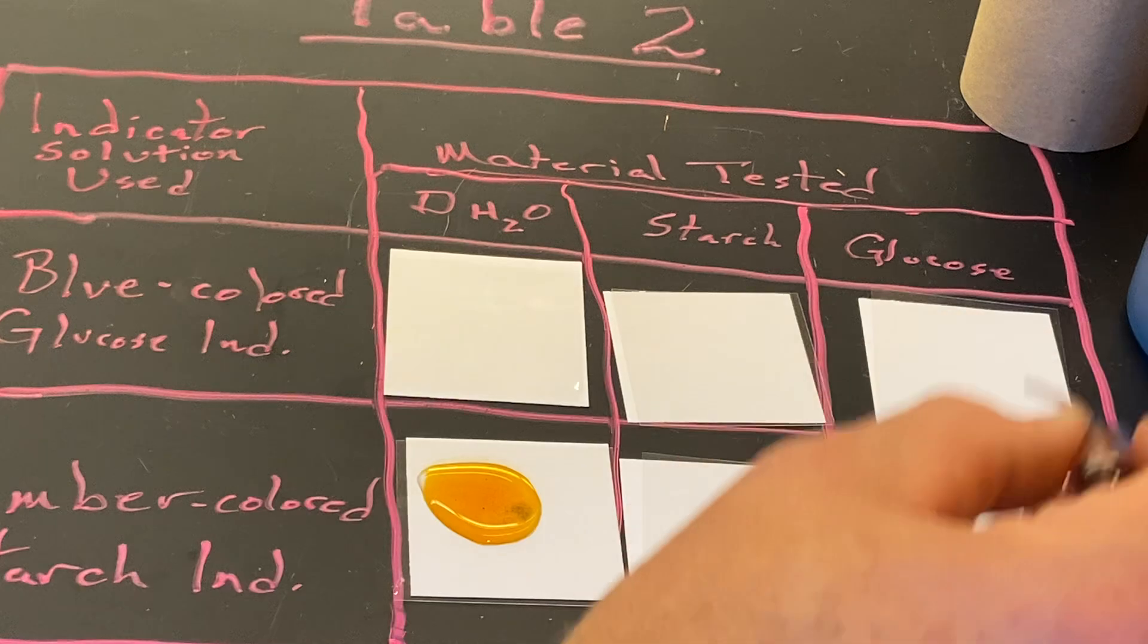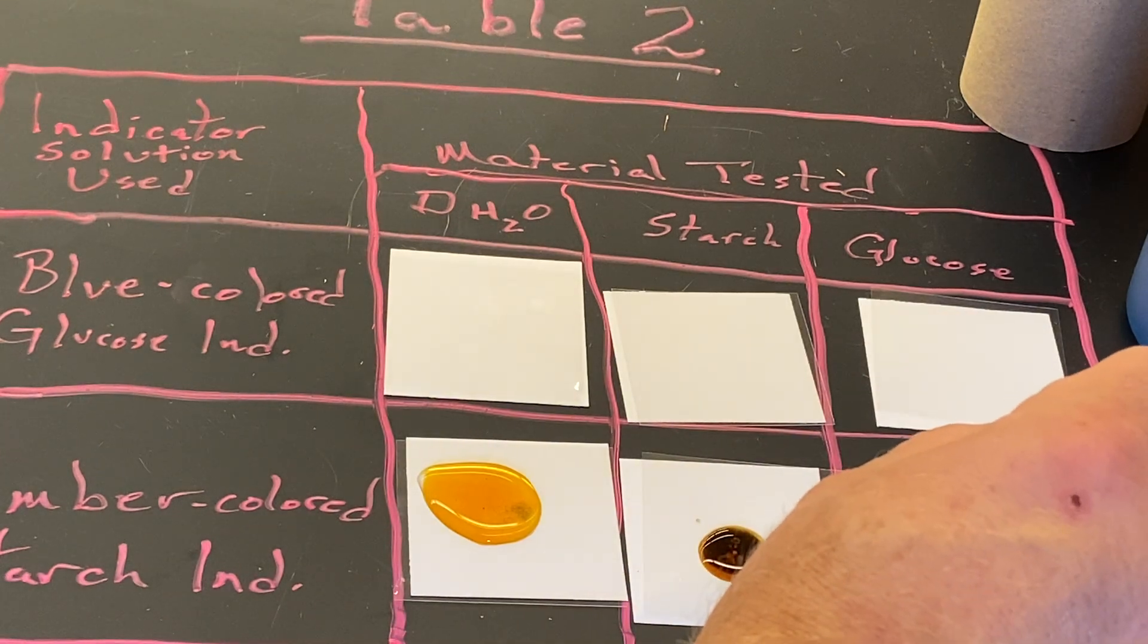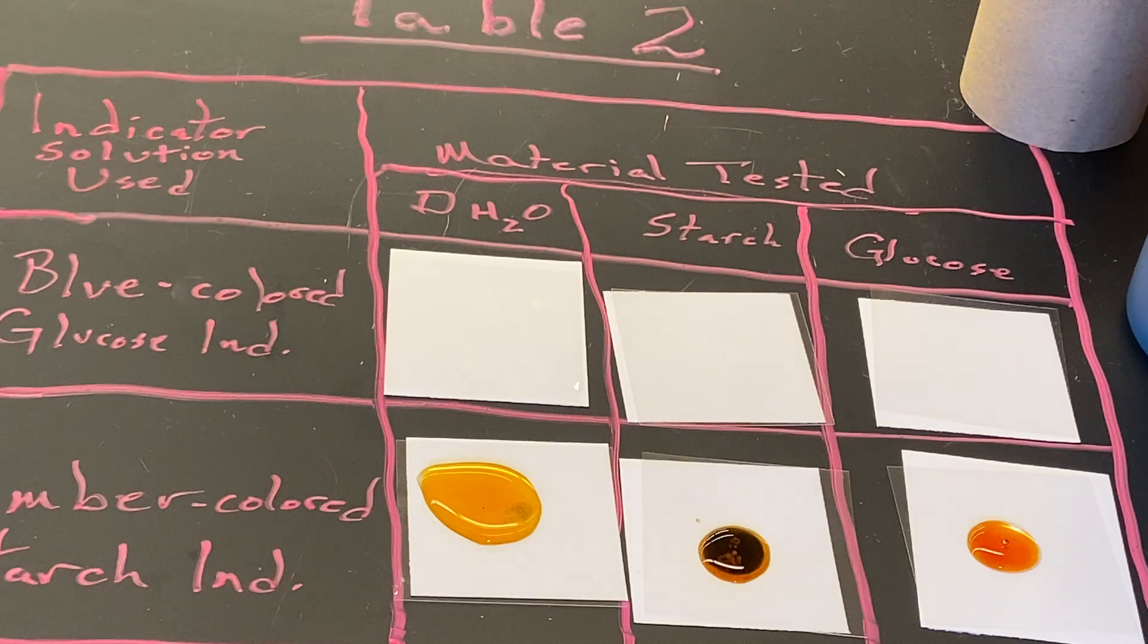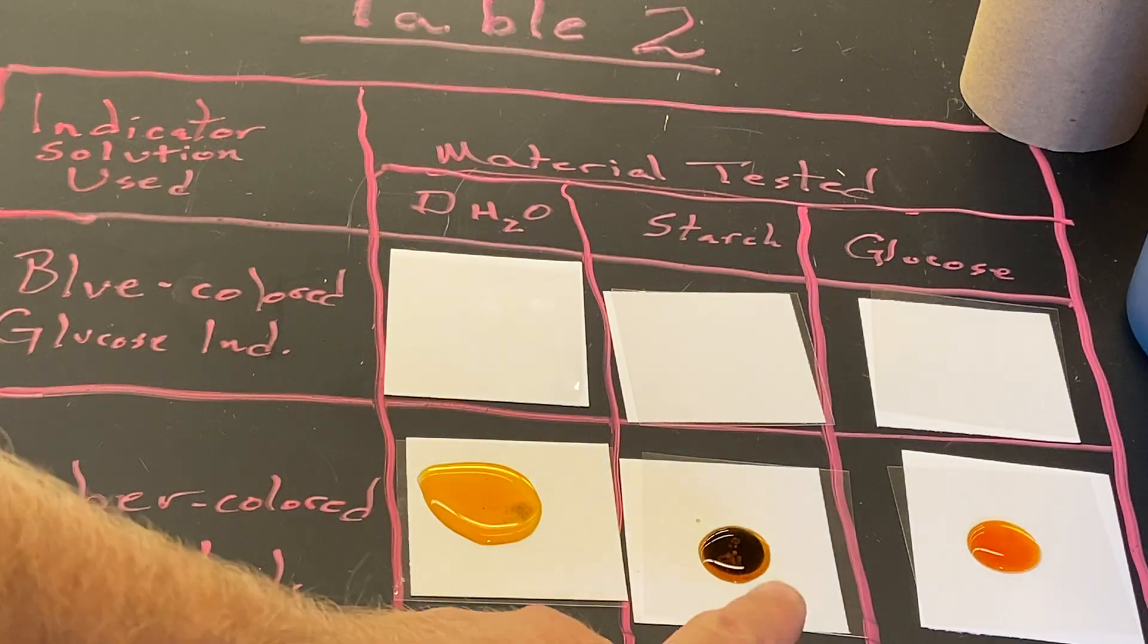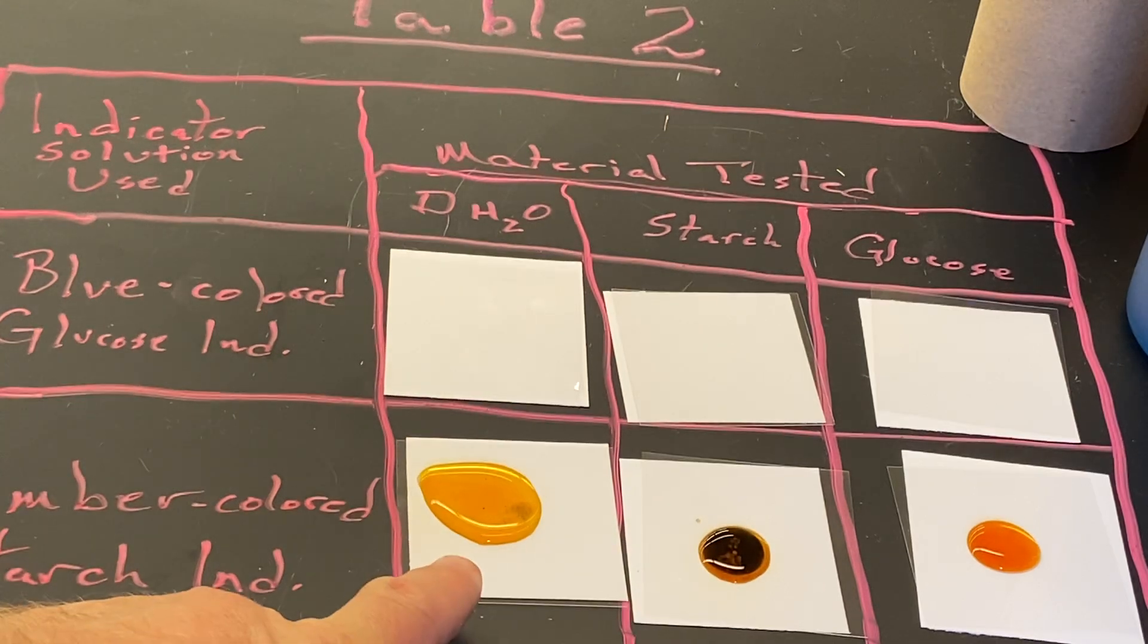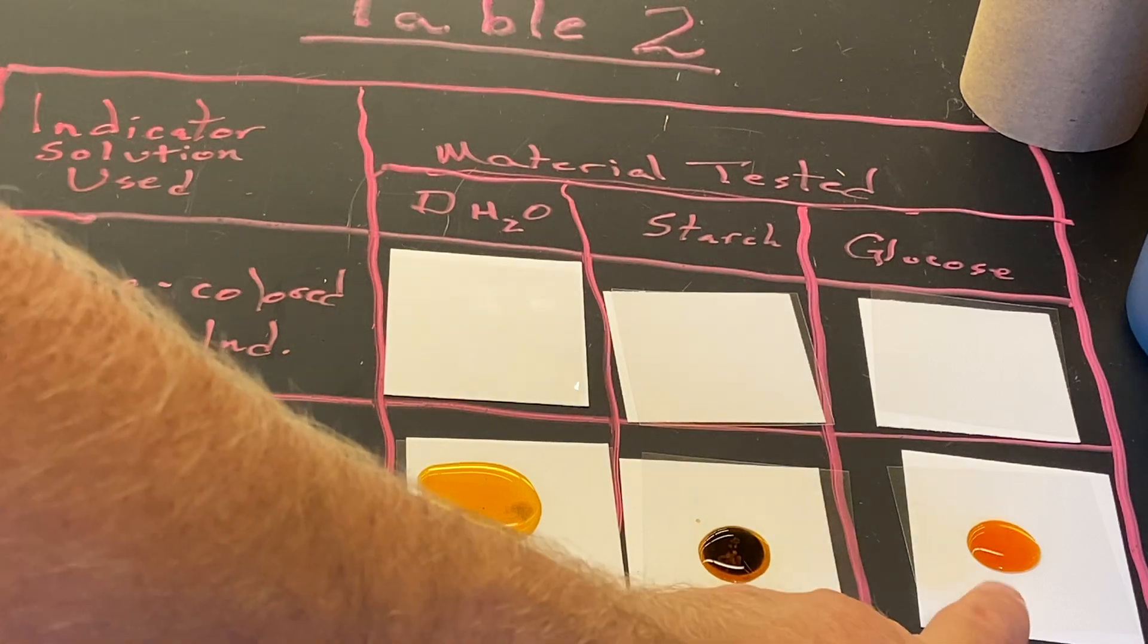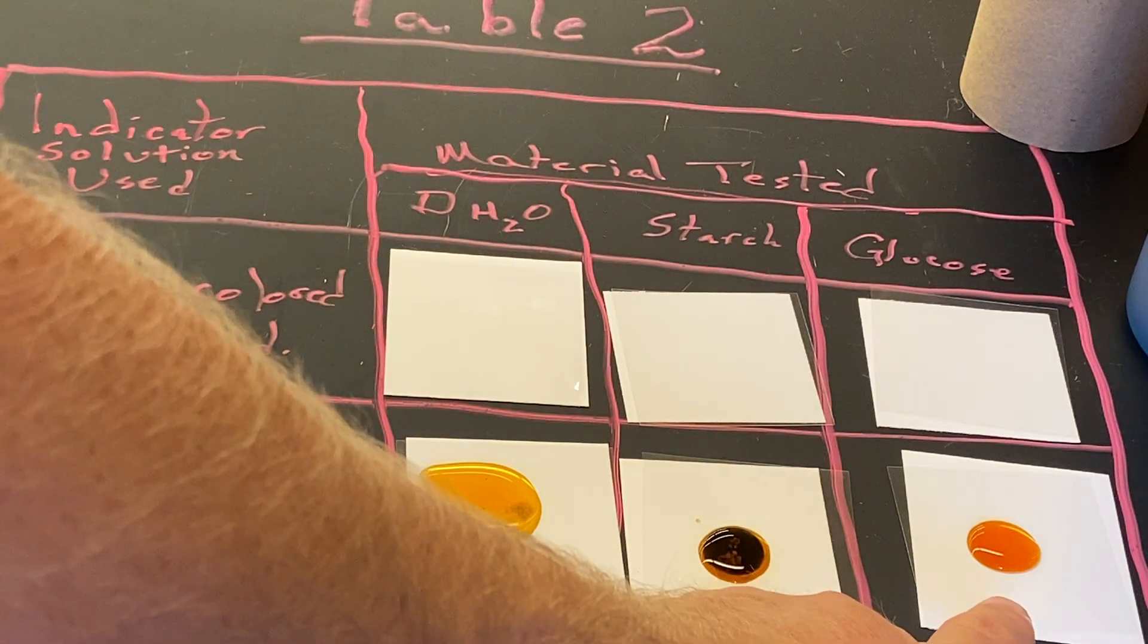And the glucose. Well, it's pretty obvious the starch indicated positively—that's the black coloration I was talking about. So distilled water has no starch in it, starch solution has starch in it, and glucose showed the same result as distilled water: no starch.